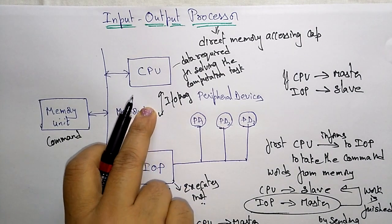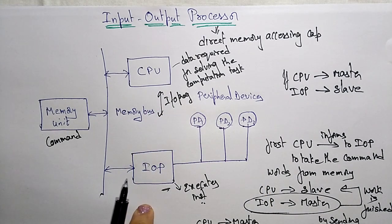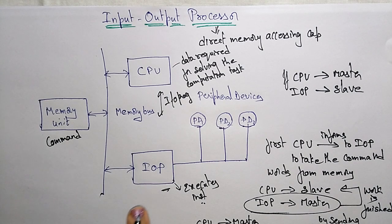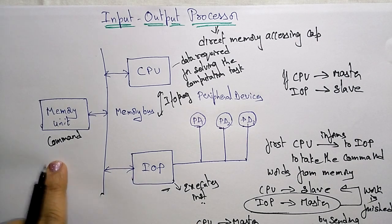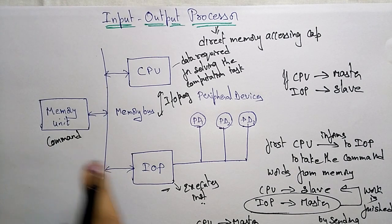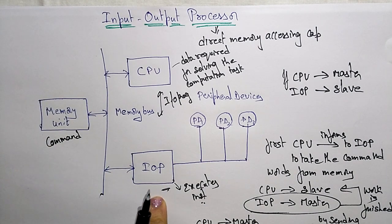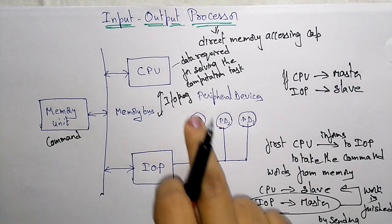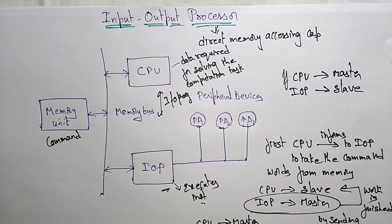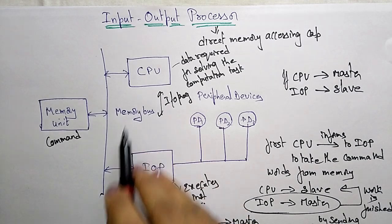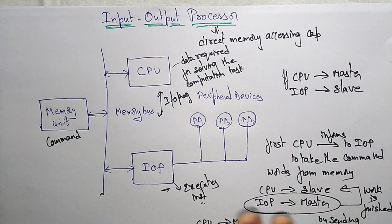Whenever the CPU issues signals to the IOP to perform a task, the IOP becomes the master. It has the processing capability to execute instructions. It takes the command words from the memory unit, performs the operation, and the result is sent to the peripheral devices or back to memory. Whenever this work is over, the IOP sends an interrupt signal back to the CPU saying that execution is finished. Now the CPU becomes the master and performs other tasks.